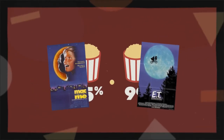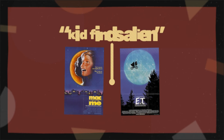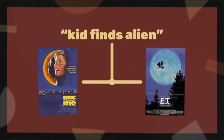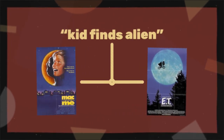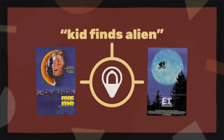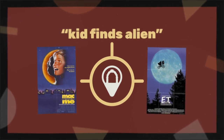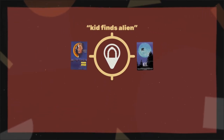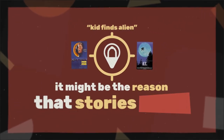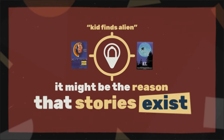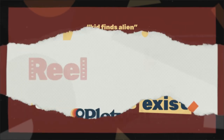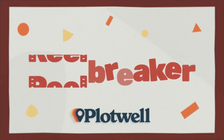But how did two movies with essentially the same premise end up being so polarized? The answer lies in an element of story structure that goes back hundreds of years. In fact, it's so important it might be the reason that stories exist. So let's see where they went wrong.